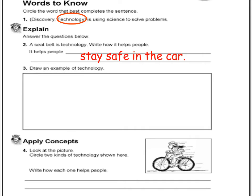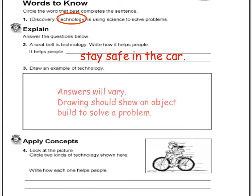Number three: draw an example of technology. Answers will vary. Drawing should show an object built to solve a problem.